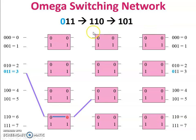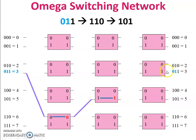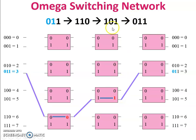Again, rotate left: 110 becomes 101. From the level one switch to level two, the pattern is 101. The second bit is 1, identified by the level two switches, so it goes to output port number 1. Rotate left again: 101 becomes 011. From level two to level three, the last bit is 1, so the cell connects through to the destination.